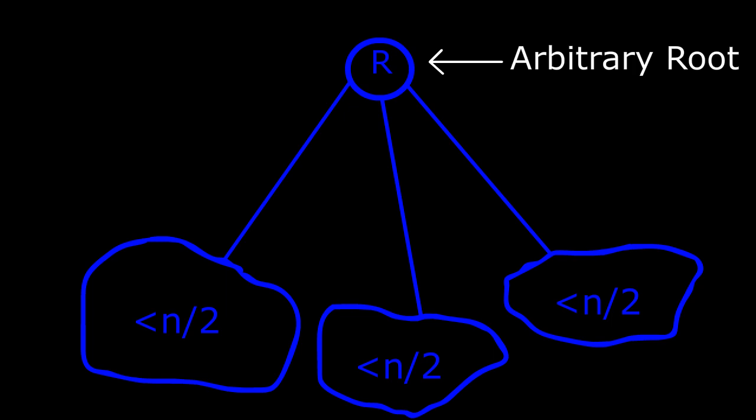We can just pick an arbitrary root to start with and notice the number of nodes each of the forests will have after deleting it. And that's obviously the size of the subtree. Let n be the size of the current tree. If all the subtrees have sizes less than n/2, we have our centroid and that's the arbitrary root we just picked.